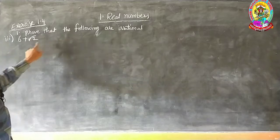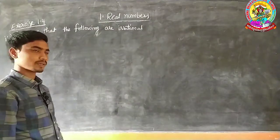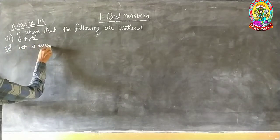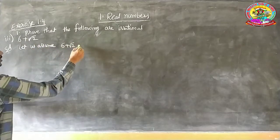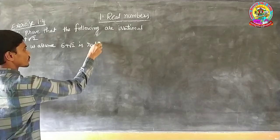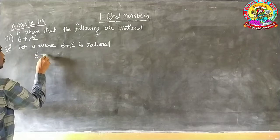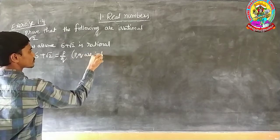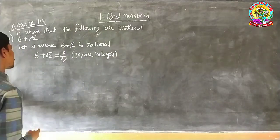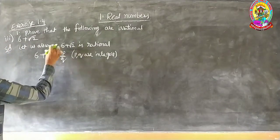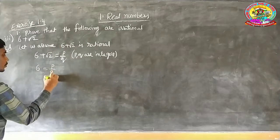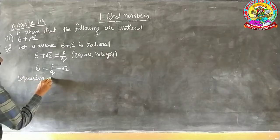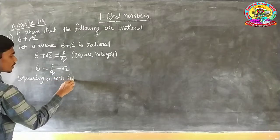Next: prove that 6 plus root 2 is an irrational number. Solution: let us assume 6 plus root 2 is rational. If it is rational, it is possible to write it in the form of P by Q, where P and Q are integers. Transpose root 2 to that side: 6 equals P by Q minus root 2. Squaring on both sides: